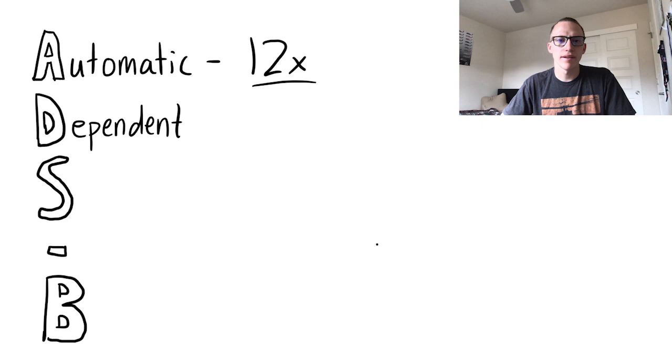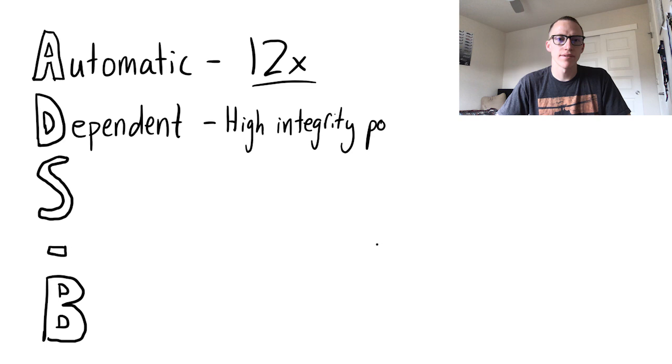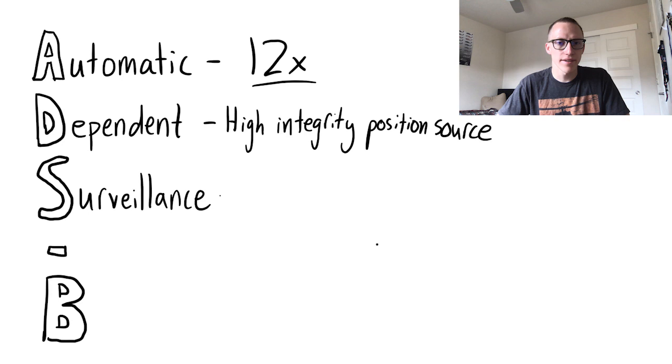D stands for dependent. Aircraft using ADS-B out require a high integrity position source, which could be WAAS GPS. S stands for surveillance. ADS-B provides a radar-like surveillance for ATC to have aircraft position.